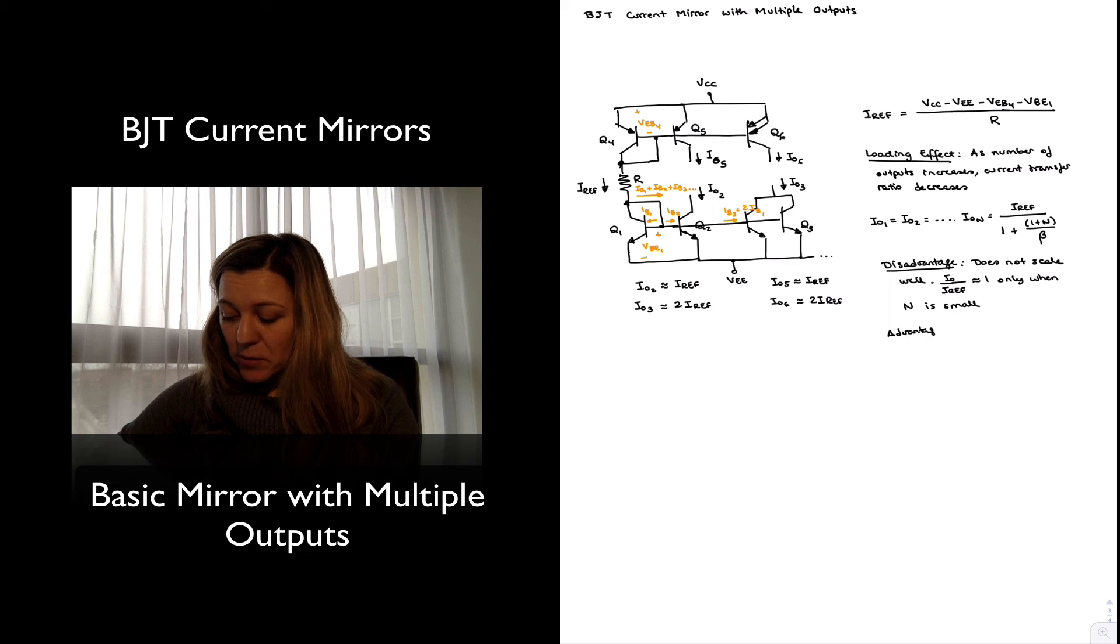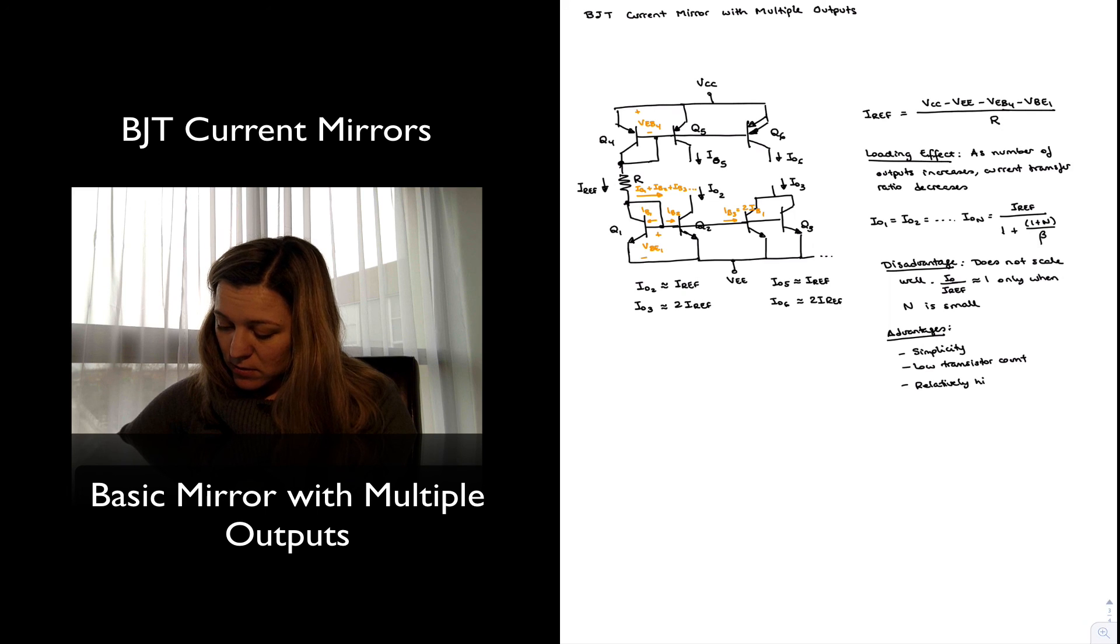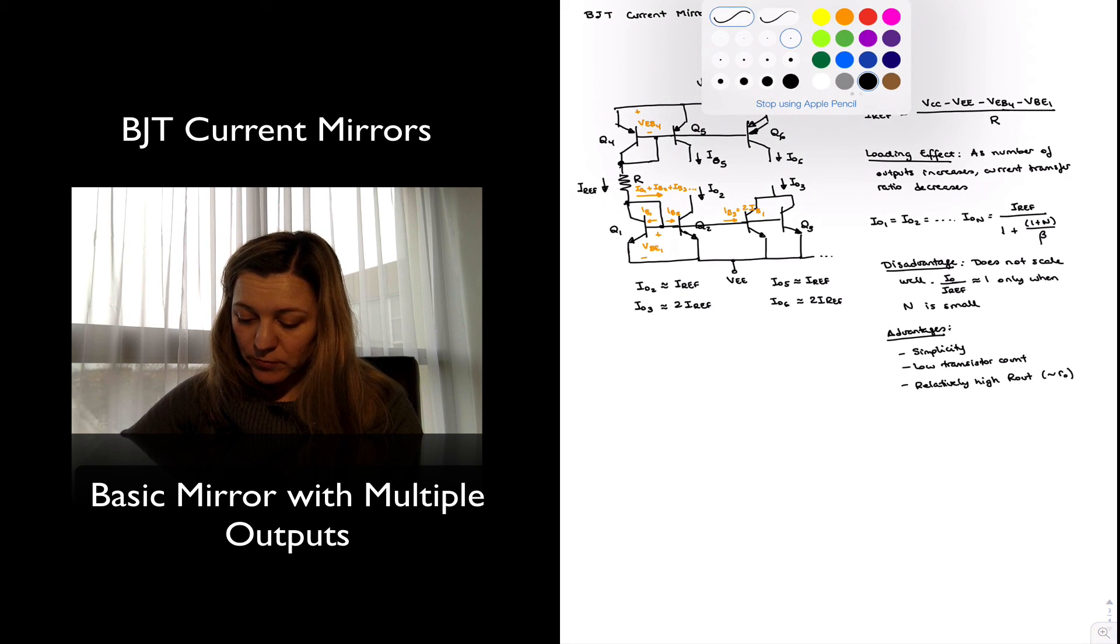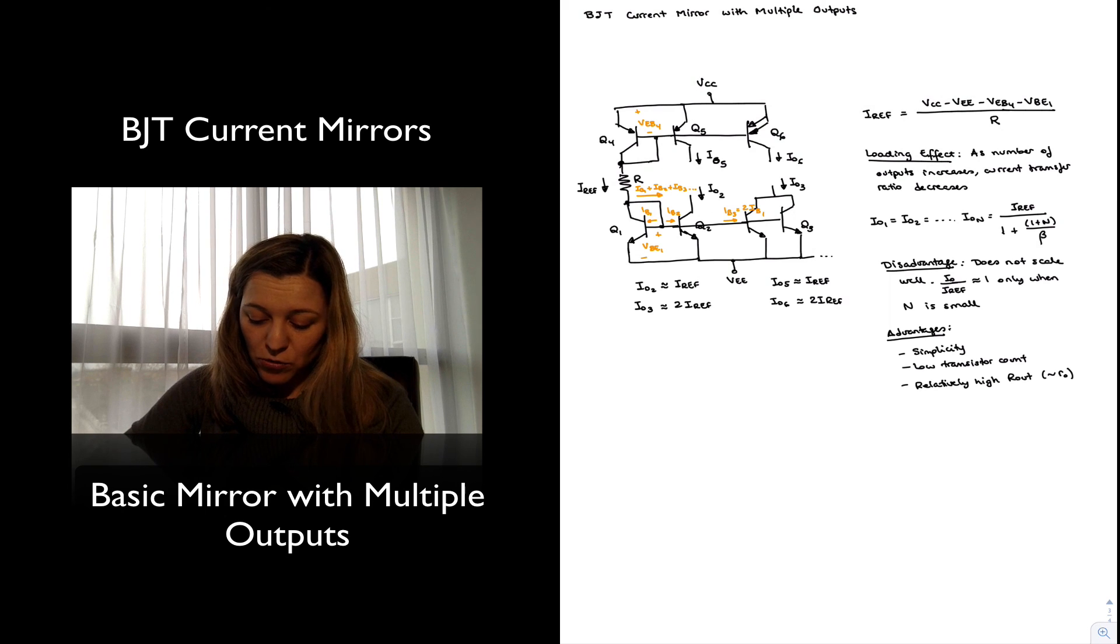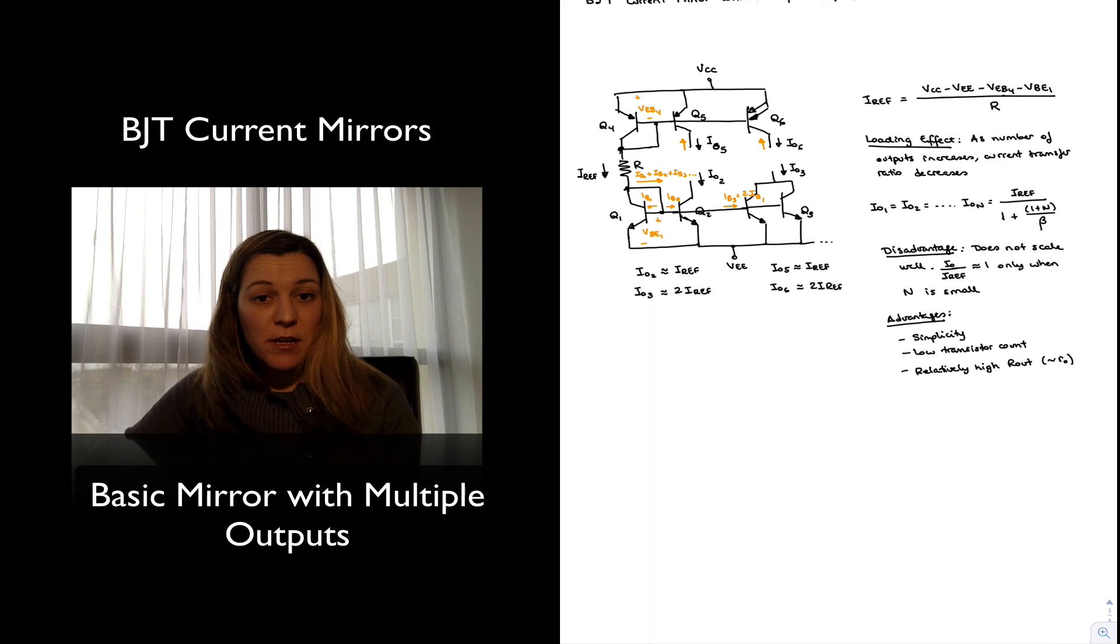Now there are other advantages to the basic mirror, that is basically what this is, it's just a basic mirror with multiple outputs. And the advantage is simplicity, low transistor count, for a basic mirror we can build it with simply two transistors, as well as relatively high output resistance. So essentially, approximately equal to r_o, small r_o. And that's the case for every single output. I mean, you will see the output resistance looking into transistor Q5, will be little r_o for Q5, output resistance looking into transistor Q6, little r_o for Q6, et cetera. So for every output, the output resistance is approximately equal to little r_o for the particular transistor. And that's it.